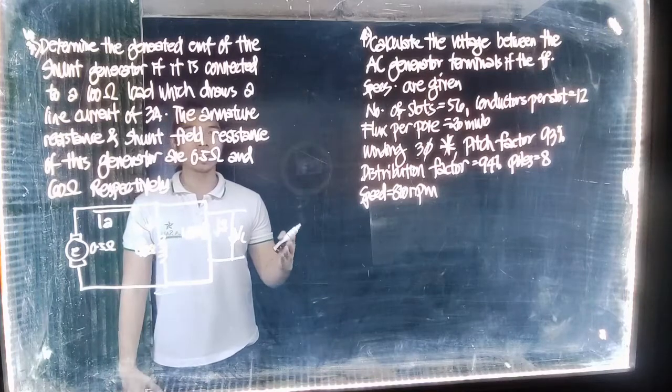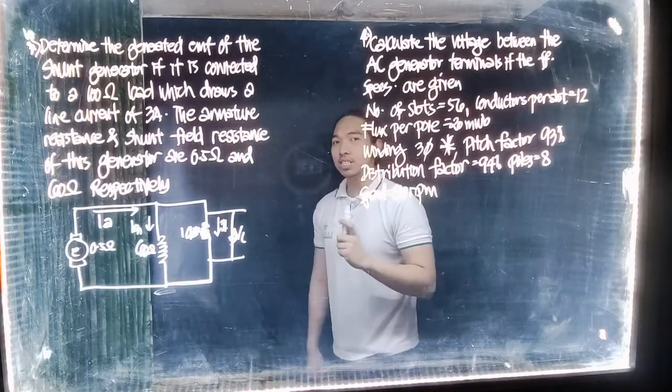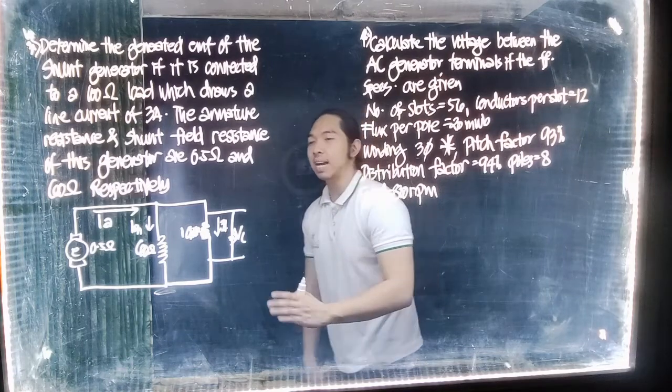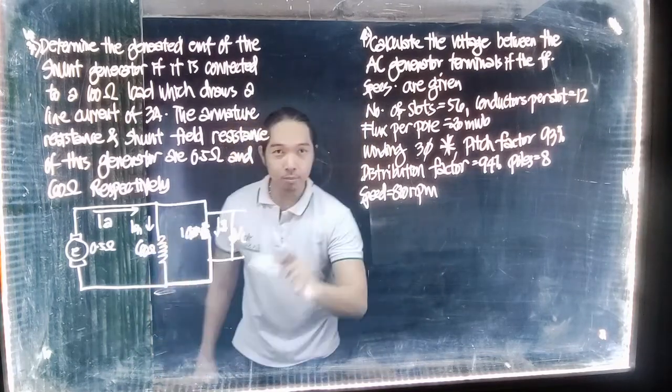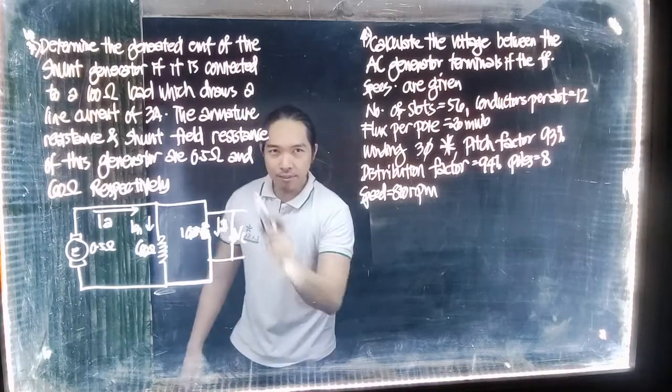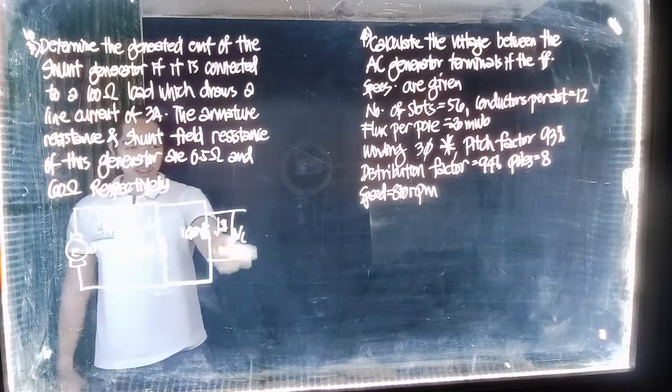So how do we solve a parallel circuit? This shunt circuit is a parallel circuit. We solve it by starting from the rightmost part. So we're going to solve this part first. After solving this part, we can proceed to the other parts.